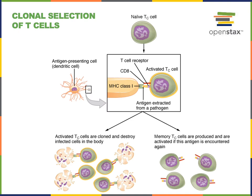Whenever a naive T lymphocyte is activated by antigen presentation, that T lymphocyte will divide making more T lymphocytes that all have the same T cell receptor. Some of the T cells produced in this process will be memory T cells that are long lived in order to provide an immunological memory.